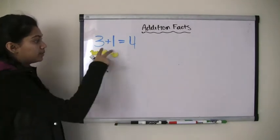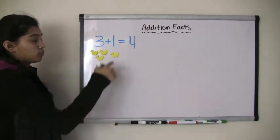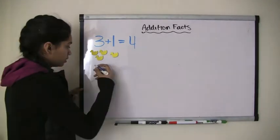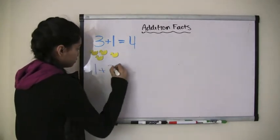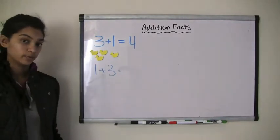But what if I flipped these two numbers? So instead of it being 3 plus 1, I had 1 plus 3. See how I flipped them? Now what do you think the answer will be?